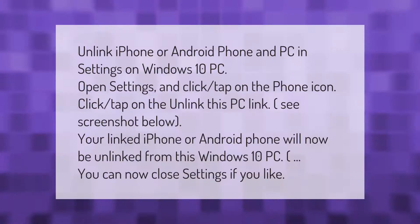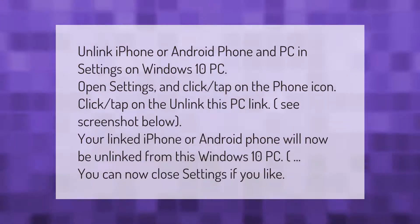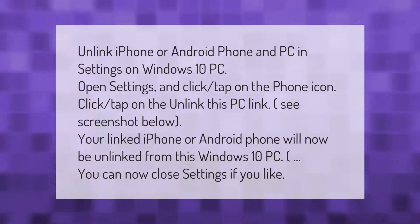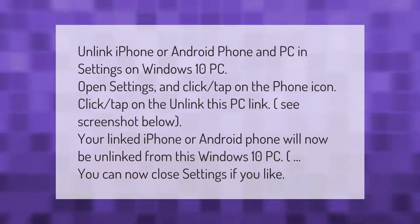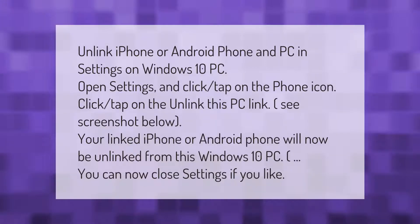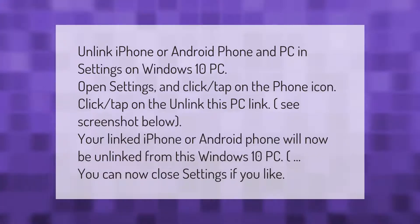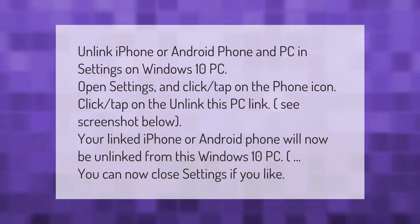To unlink an iPhone or Android phone from a PC in Settings on a Windows 10 PC: open Settings and click or tap on the Phone icon. Click or tap on the 'Unlink this PC' link. Your linked iPhone or Android phone will now be unlinked from this Windows 10 PC. You can now close Settings if you like.